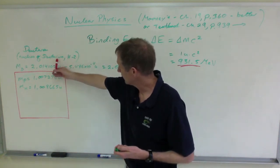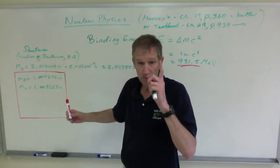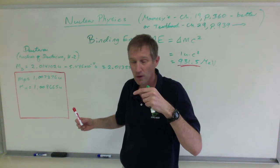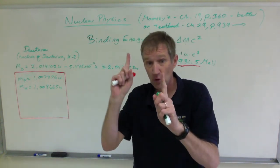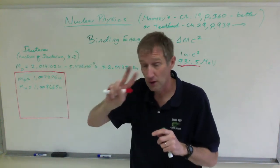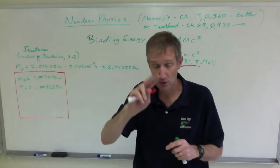Deuterium, which is the second isotope of hydrogen, which still has one proton because it's hydrogen, but it also has one neutron. And so you have two nucleons, hence the number two, the mass number two.